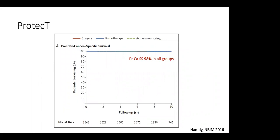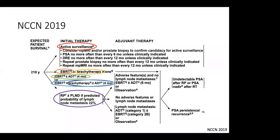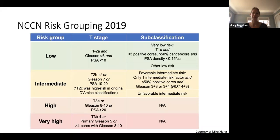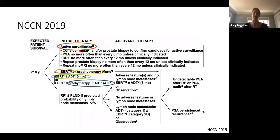Regarding PSA in the NCCN risk groupings, the risk groupings really just look at the absolute PSA. But when thinking about treatment options for a patient, you may also take into account PSA velocity, doubling time, PSA density — a measure of PSA based on prostate volume — and other nuanced factors like percentage of positive cores. For example, less than 50% positive cores can make someone a favorable intermediate, meaning low volume disease.